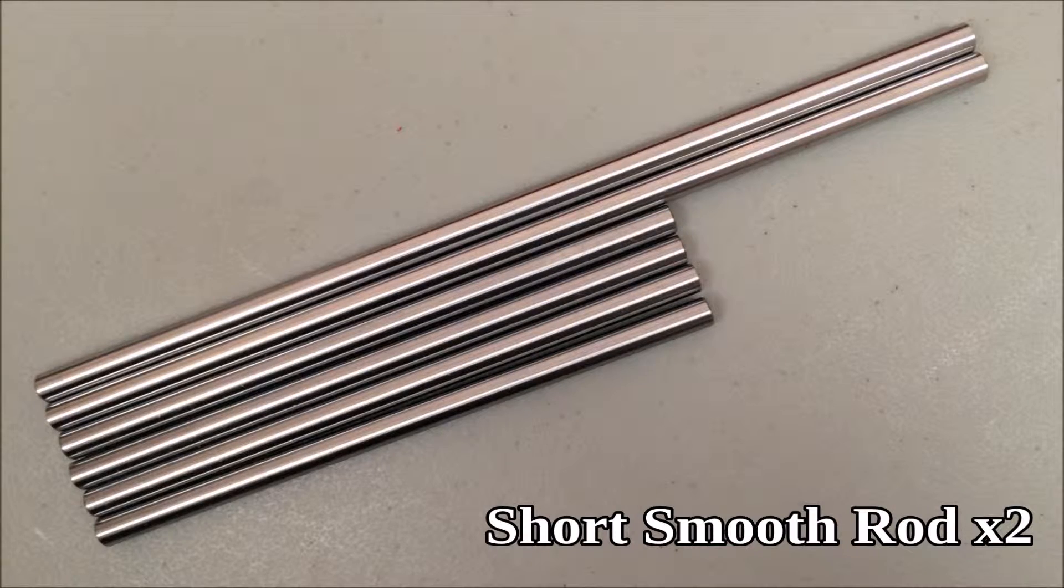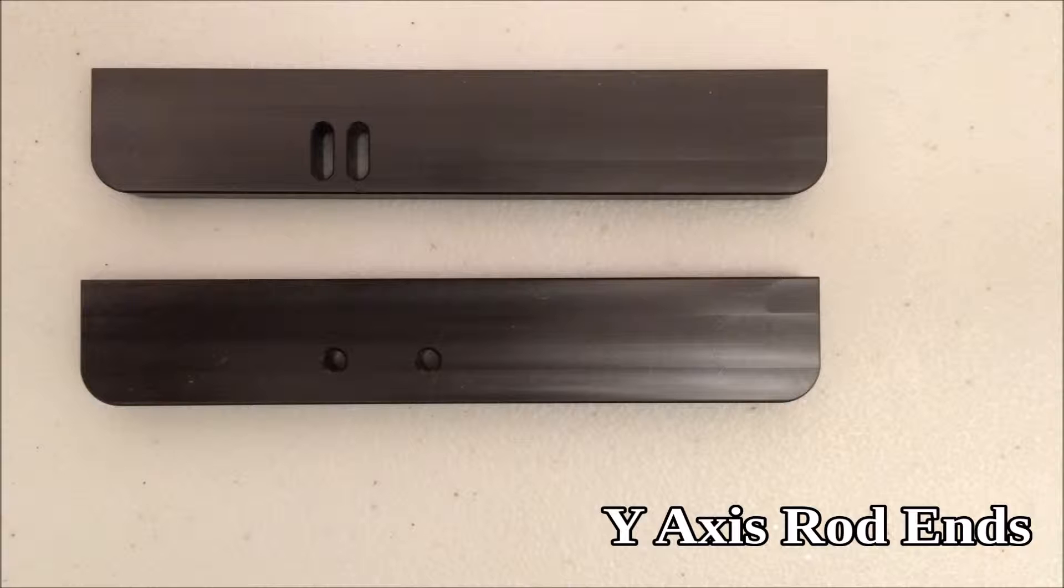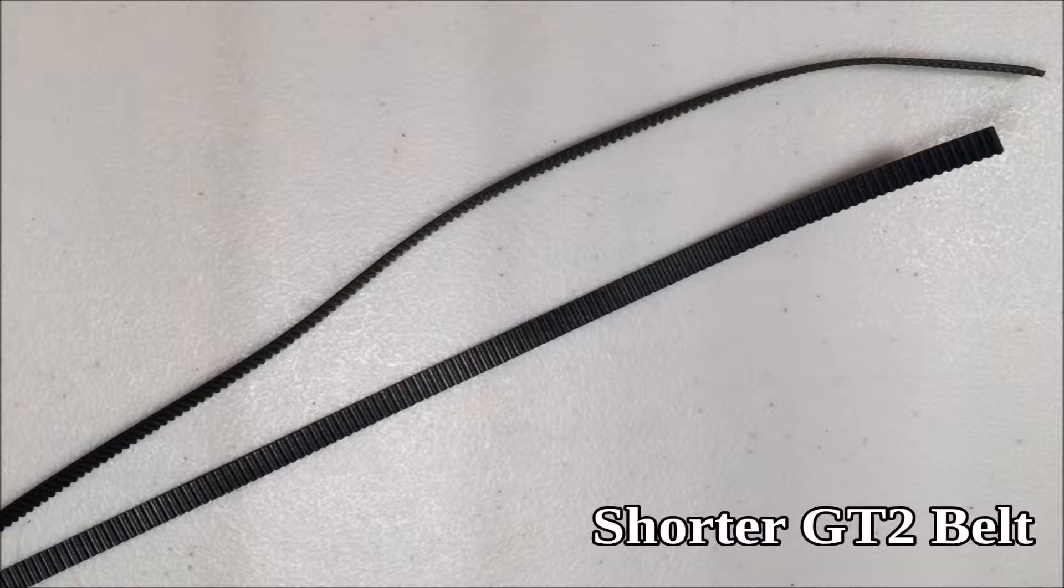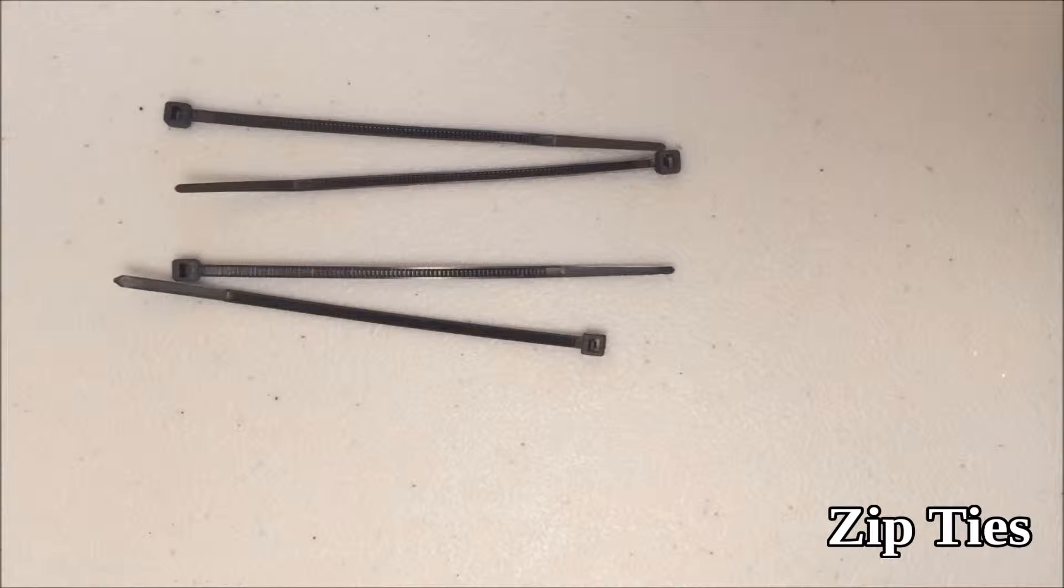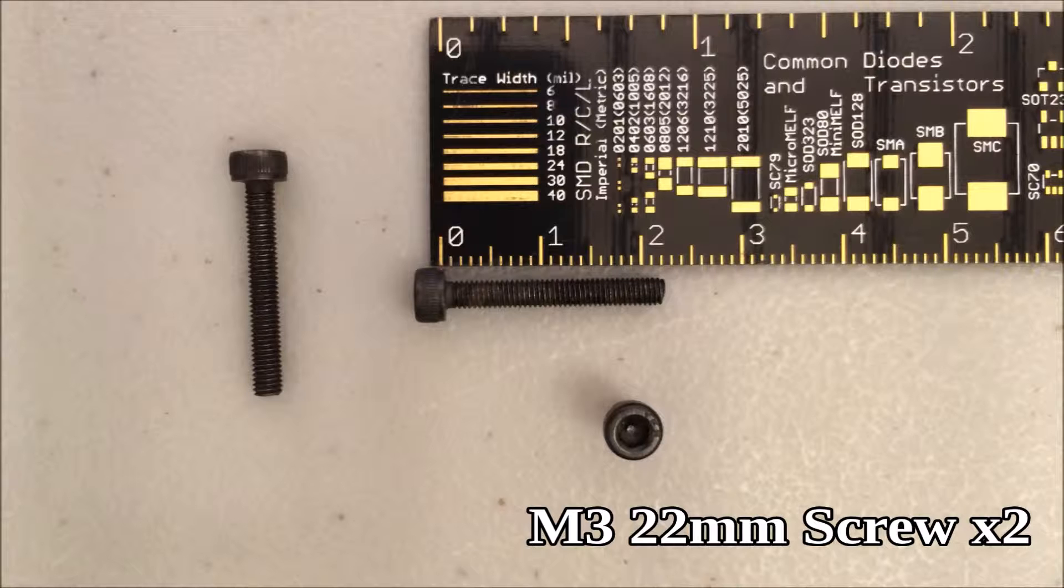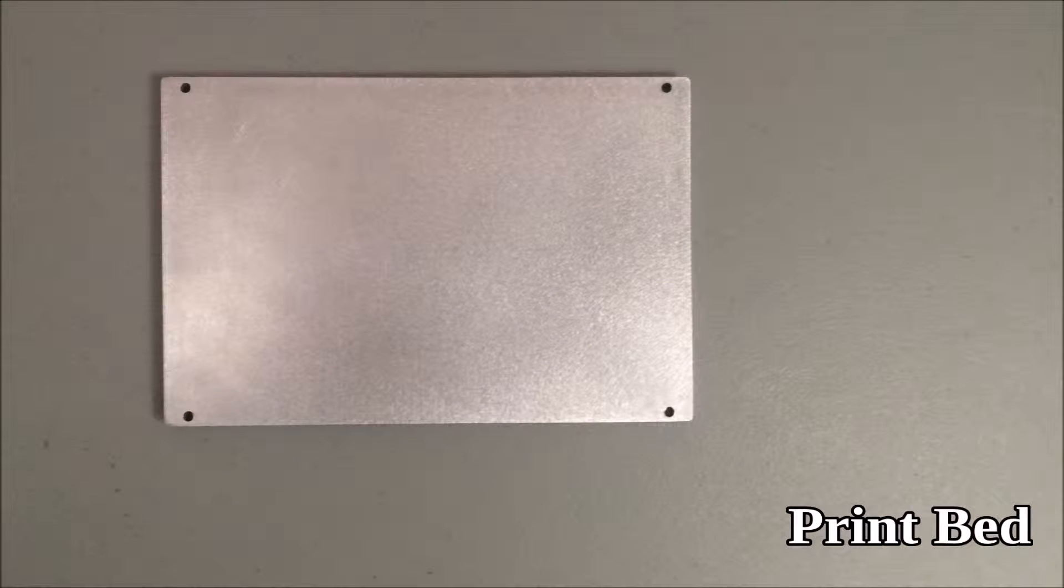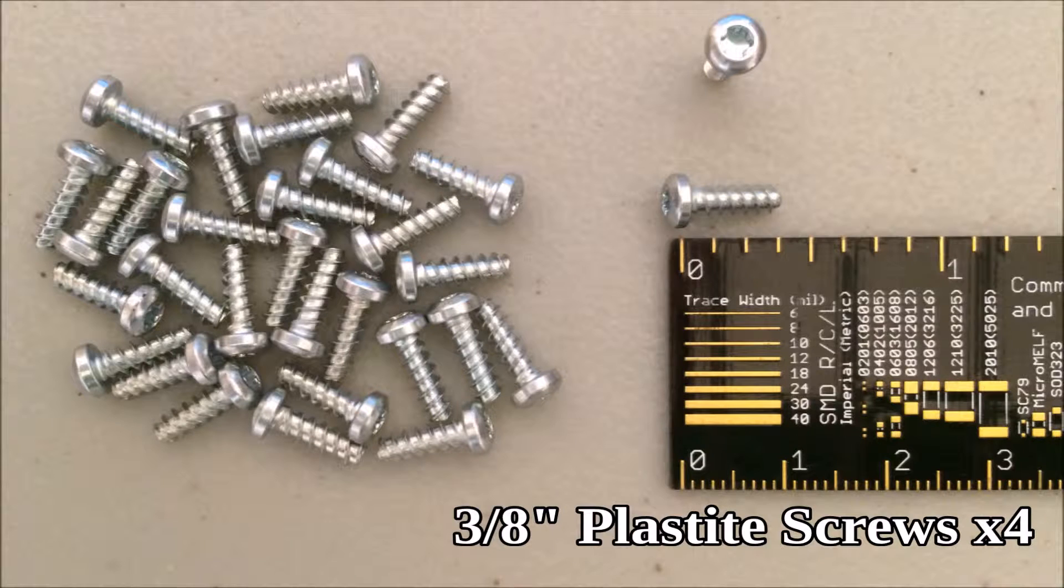You need two of the short smooth rods, both of the y-axis rod ends which are the same shape but have different holes, the shorter of the GT2 belts, a belt tensioner, zip ties, two M3 22 millimeter screws, the print bed, and four plastite screws.